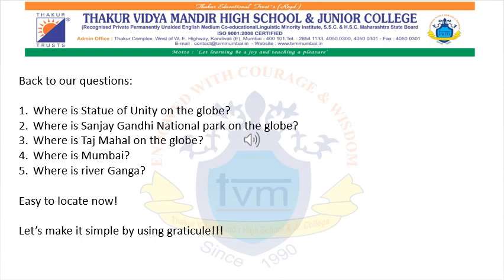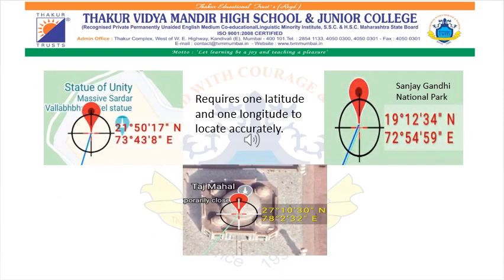Let's see what the latitudes and longitudes of the following places are. To find out the answer, take out the physical map of India and keep it in front of your eyes. Find out where the Statue of Unity is. It is at 21 degrees 50 minutes 70 seconds north latitude and 73 degrees 43 minutes 8 seconds east longitude.